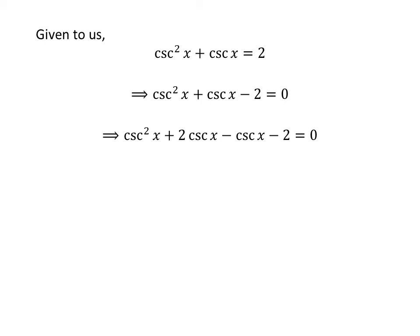Let us apply the quadratic factorizing technique here. We can write the above equation as: square of cosecant of x plus 2 times cosecant of x minus cosecant of x minus 2 is equal to 0. Taking out the common factor cosecant of x in the first two terms, and taking out the common factor minus 1 in the next two terms, gives us: cosecant of x times (cosecant of x plus 2) minus (cosecant of x plus 2) is equal to 0.